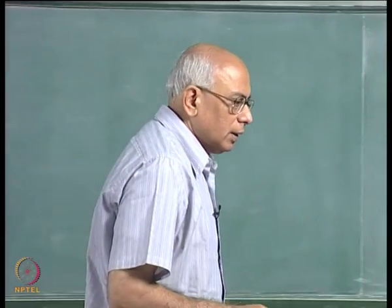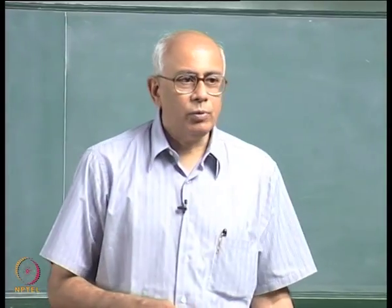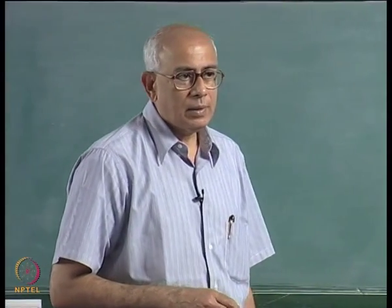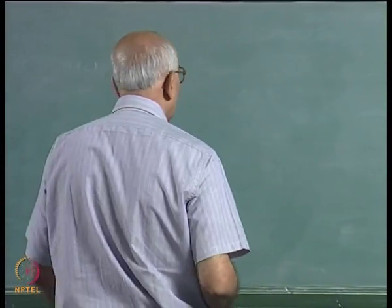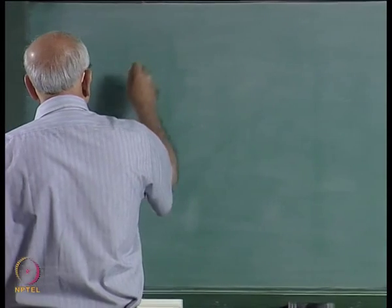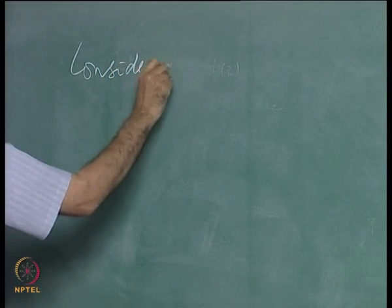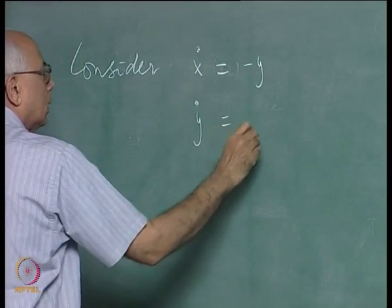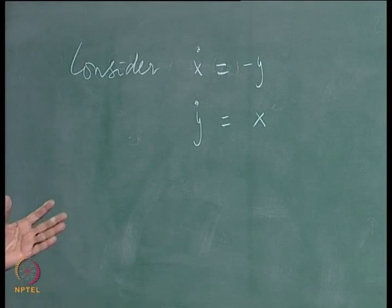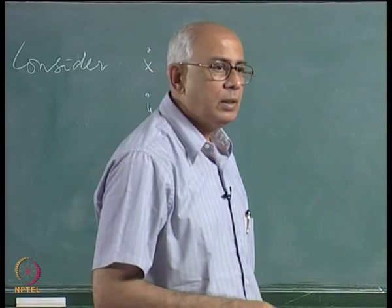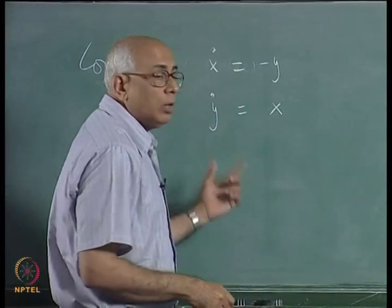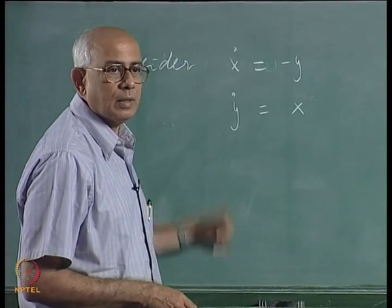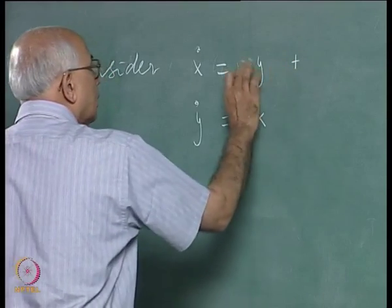We begin today with an example of when you have a center manifold in a dynamical system and how linearization could lead to an erroneous conclusion. Consider the system x-dot equal to minus y and y-dot equal to x. This linear system has a critical point at the origin which is a center, because the eigenvalues of the linearized matrix are plus or minus i. It is like the harmonic oscillator problem, but now I add non-linear terms to it.